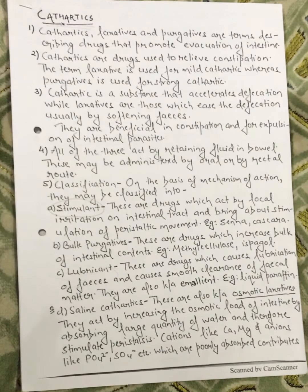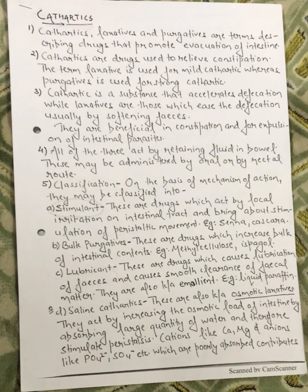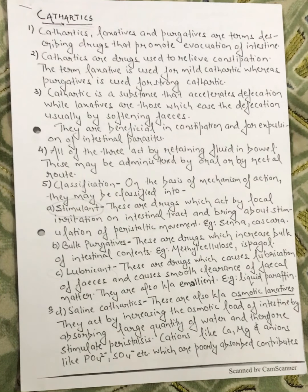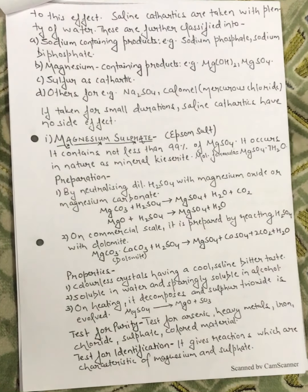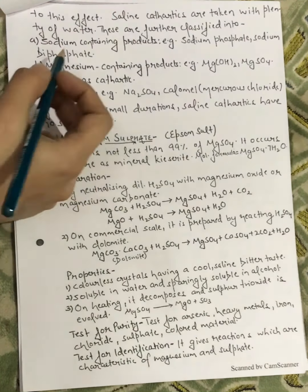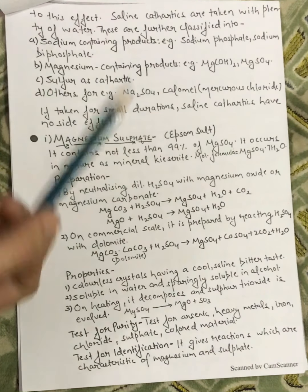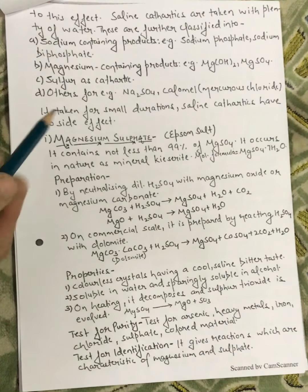Next, we have the saline cathartics, also known as osmotic laxatives. They act by increasing the osmotic load of the intestine by absorbing large quantities of water, and therefore stimulate peristalsis. Cations like calcium and magnesium, and anions like phosphate and sulfate, are poorly absorbed and contribute to this effect. They are taken with plenty of water. They are further classified into sodium-containing products like sodium phosphate and sodium bisphosphate, magnesium-containing products like magnesium sulfate, and sulfur-containing products like sodium sulfate and calcium sulfate.